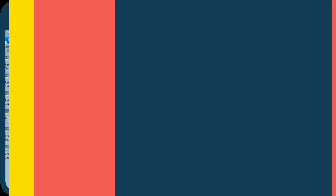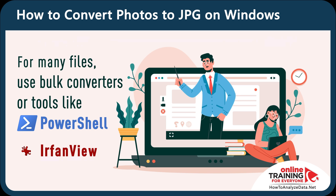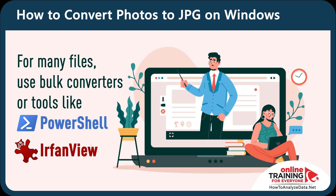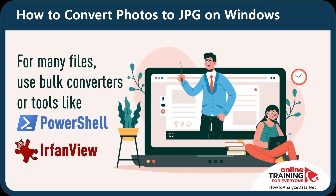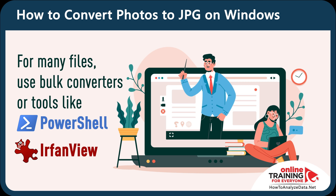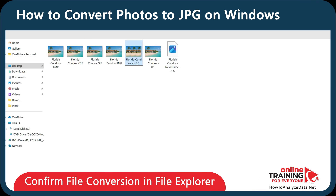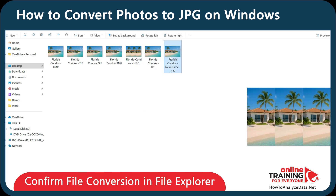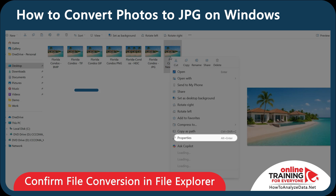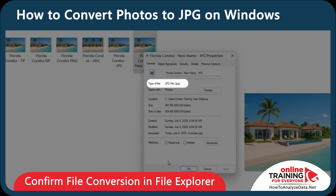A couple of other tips: when saving, make sure to give the picture a new name so you're not overwriting the original. If you have many pictures, you can repeat this process for each image individually, but for many files you can also consider using a bulk image converter tool or automate the process using PowerShell. You can confirm the file conversion in File Explorer — once your image is saved, check the destination folder, right-click the converted file, go to Properties, and confirm the file type is JPEG.